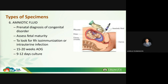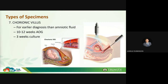Another specimen from pregnant women is chorionic villus, which is actually a part of the placenta. Chorionic villus can detect congenital anomalies much earlier than amniotic fluid — it can be collected at 10 to 12 weeks of pregnancy, the second to third month. However, culturing it takes three weeks, and an ultrasound is used to guide the specimen collection to avoid harming the baby.